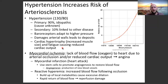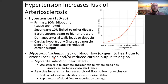Athletes with cardiac hypertrophy tend not to have decreased ventricular chamber size. Myocardial ischemia is a lack of blood flow or oxygen to the heart due to arterial occlusion or reduced cardiac output. A myocardial infarction is the scientific name for a heart attack. We can use stem cells to promote angiogenesis — the production of new blood vessels to restore blood flow.